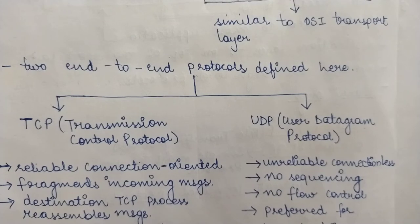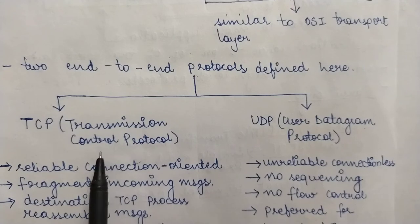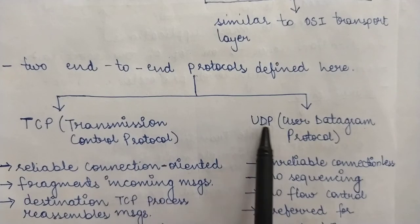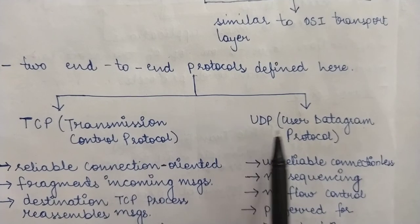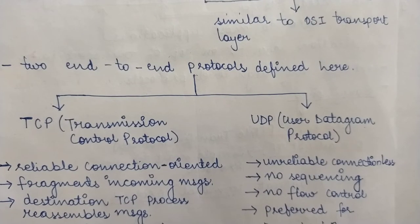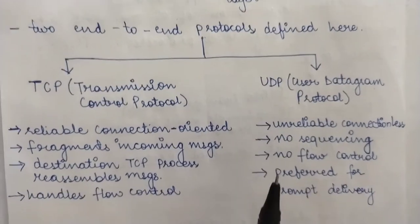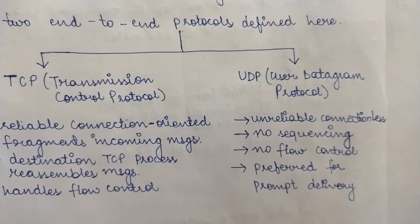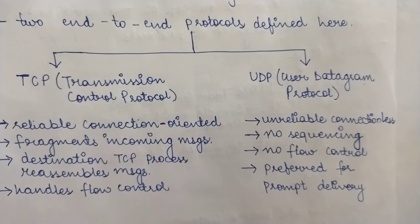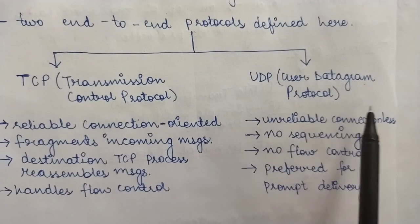The two end-to-end protocols are: TCP, which is known as the Transmission Control Protocol, and UDP, which is the User Datagram Protocol. These two protocols are used at the transport layer. Let's have a look at when you use the TCP protocol and when you use the UDP protocol.